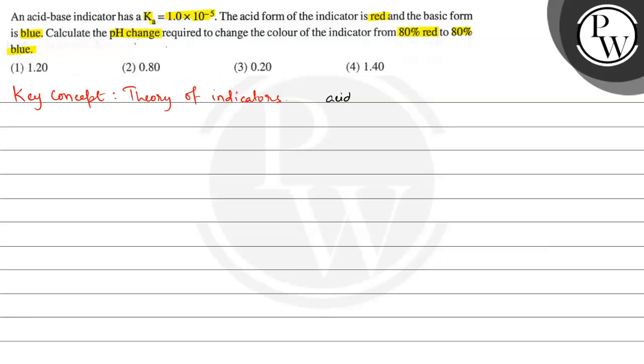In acidic form this is red and in the basic form this is blue. The Ka value is given, that means this is an acidic indicator. Let it be HIN and this dissociates to form H+ plus IN-. HIN is the acidic form in the acidic medium and IN- is the basic form in the basic medium because in the acidic medium the indicator is protonated and in the basic medium the indicator is deprotonated.